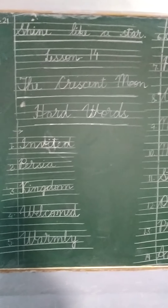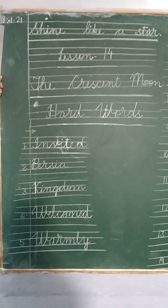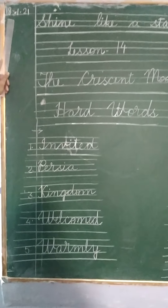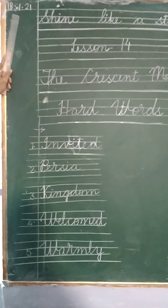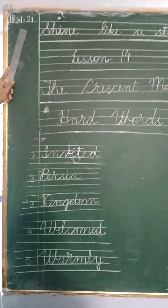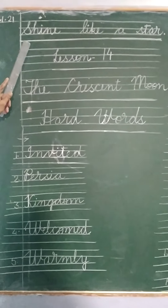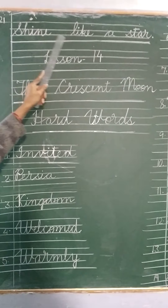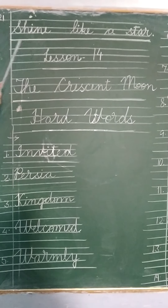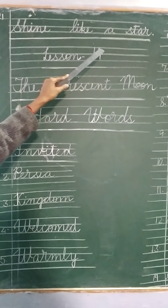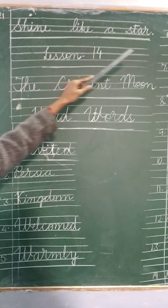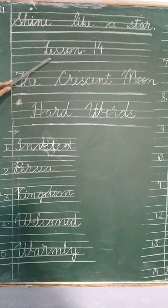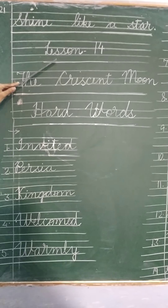First of all, you have to write the date. Today's date is 8.1.21. Then write the quotation: Shine like a star. Draw the blue pencil line and put the full stop here. Then come to the next line.